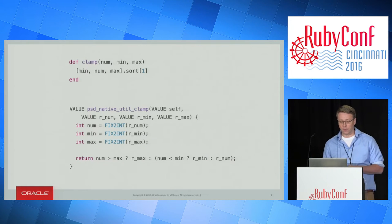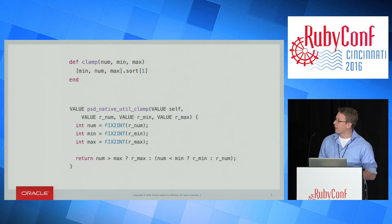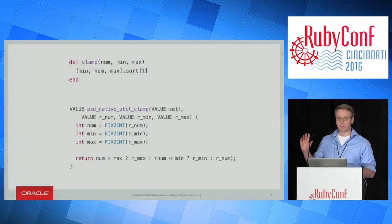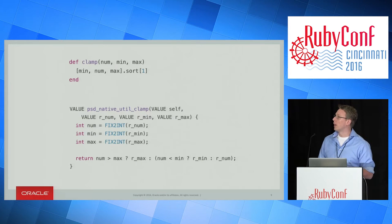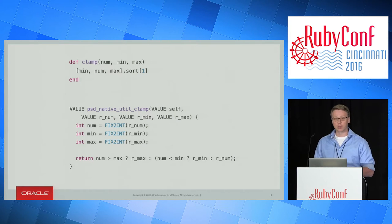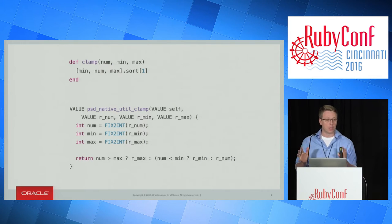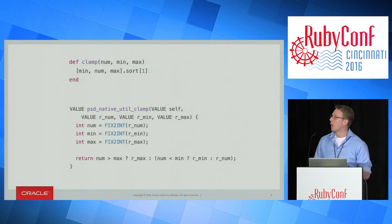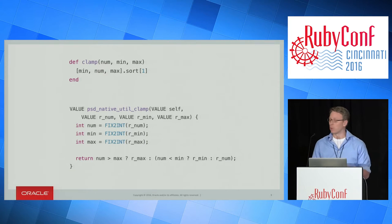Here's an example: a clamp routine that clamps a number between a minimum and a maximum. This is taken from a real library called psd.rb, which processes Photoshop files. It's slow because it creates an array of minimum, the number, and the maximum; sorts it, creating another array; then indexes it to take the middle one. This is an effective way of getting a number clamped between two values, but it's slow. So what psd.rb provides is a C extension called psd_native.